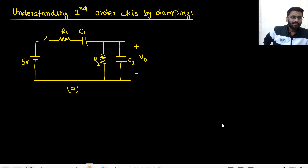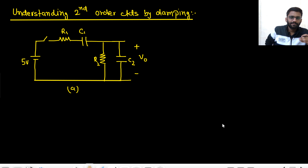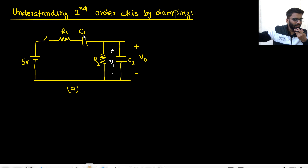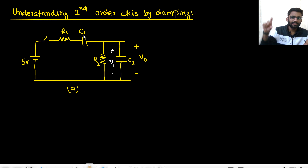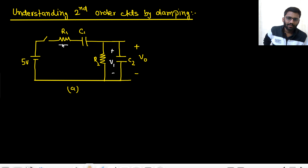Hello everyone. Now we will understand the second order circuit by the concept of damping. First, let's understand why it is a second order circuit. If I give V1 voltage to this capacitor, can I write the voltage across capacitor C1 in terms of the input voltage V1 or any known voltages? There are only two known voltages: 5 volt and V1. But I cannot write the potential because of this resistor. If this resistor was not there, the circuit would have been first order only. But now this is second order.